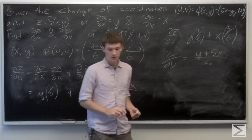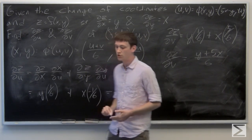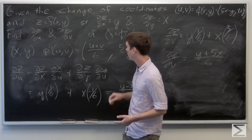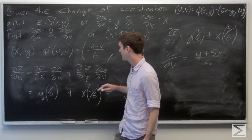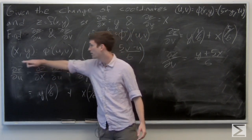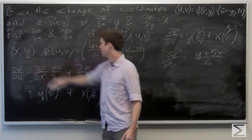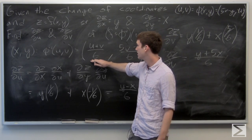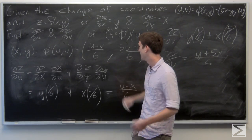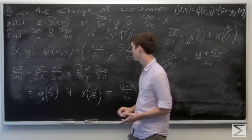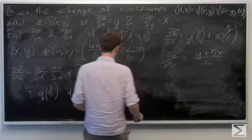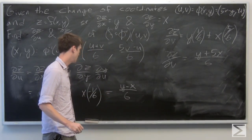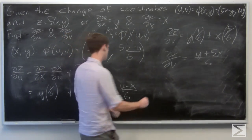We want these results in terms of u and v. We already know what x and y are in terms of u and v: x equals (u plus v) over 6 and y equals (5v minus u) over 6 respectively. So we can simply substitute these expressions.